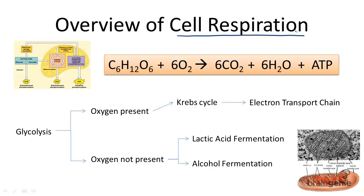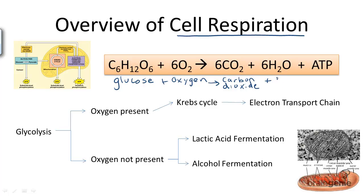The overall reaction for cellular respiration, if oxygen is present, is noted above. Let's read it as a sentence together. C6H12O6, known as glucose, plus 6O2, which is oxygen — these are the reactants of aerobic cellular respiration. The arrow means produces or yields: 6CO2, which is carbon dioxide, plus 6 molecules of H2O, which is water, plus energy — stored as ATP.